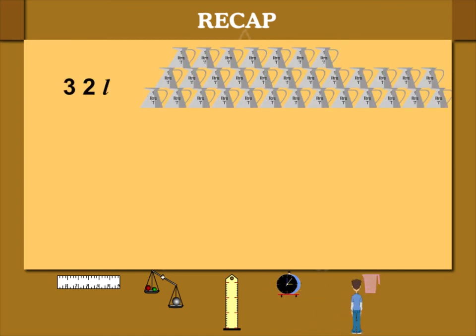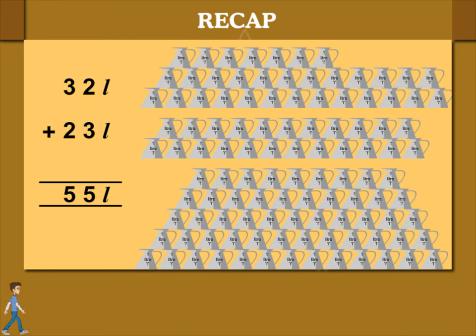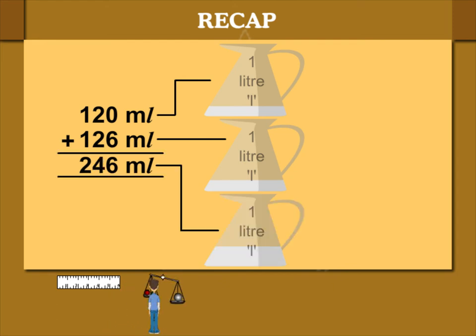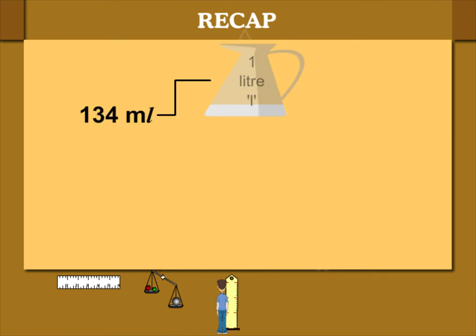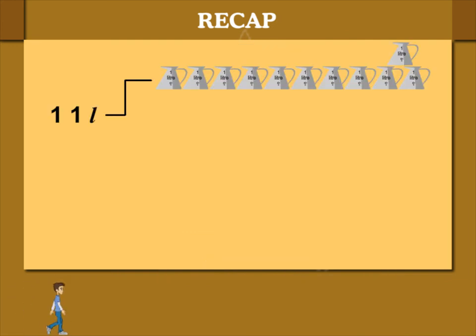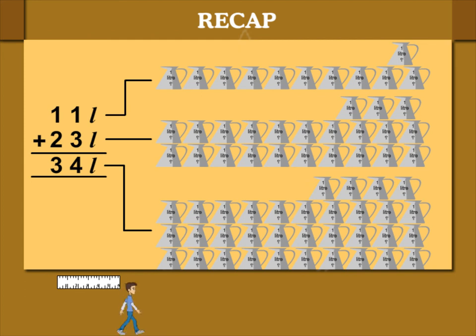Add 32 liters and 23 liters. What do you get? 55 liters. Add 120 milliliters and 126 milliliters. You get 246 milliliters. Add 134 milliliters and 49 milliliters and you get 183 milliliters. This is simple addition. Add 11 liters and 23 liters and you get 34 liters.